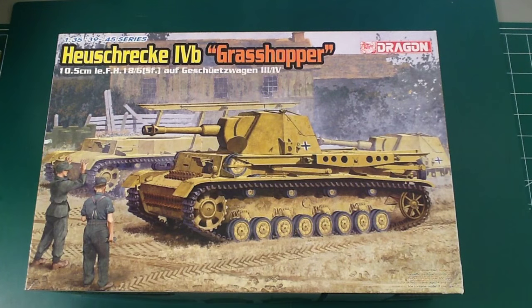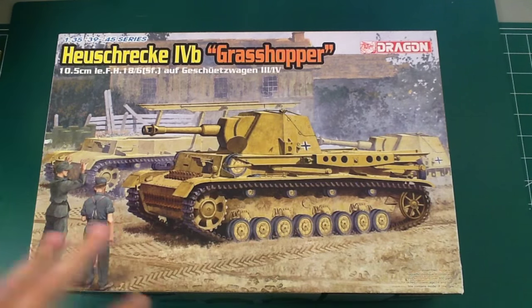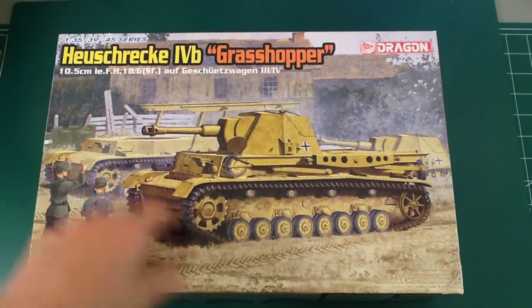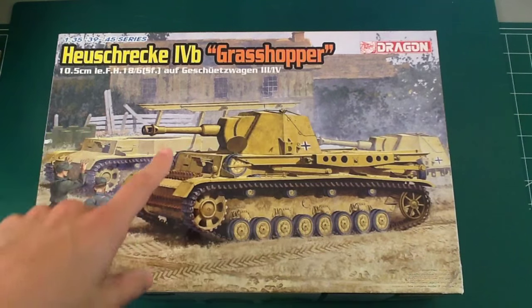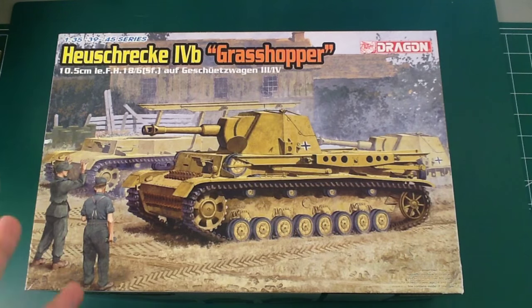I'm going to review the Heuschrecke IVb, also known as Grasshopper. This is essentially a very rare, at least in real life it was, a Panzer IV variant with a 105 in the turret which was removable as a semi-mobile strongpoint thing.